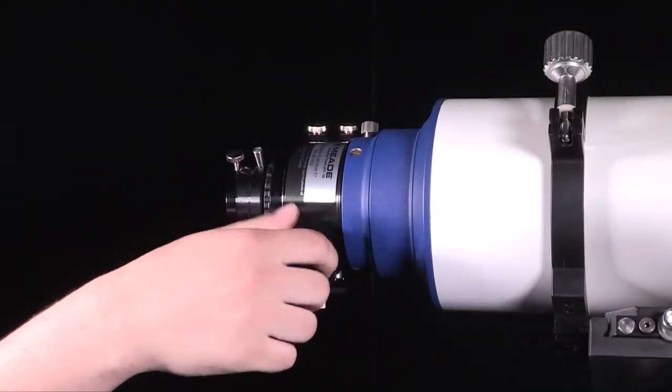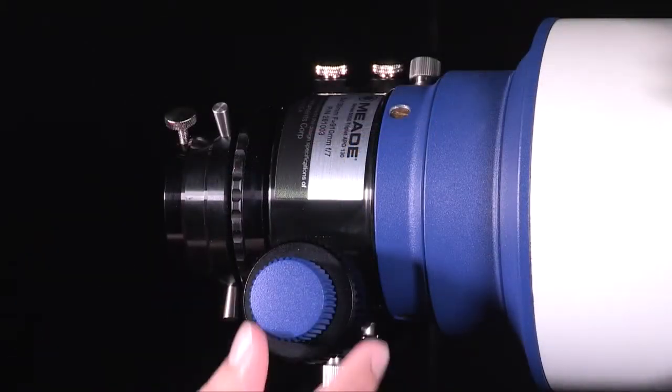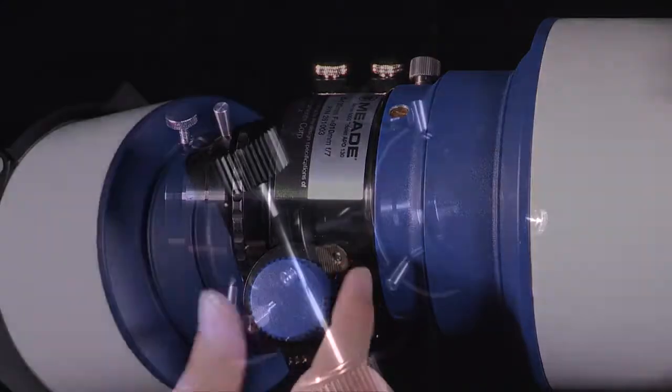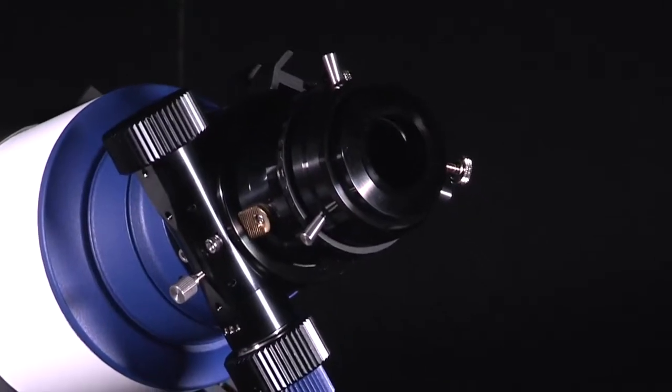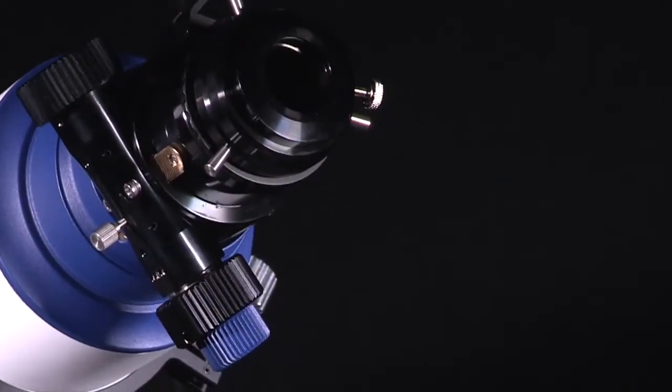New to the Series 6000 Triplet APOs is the proprietary 2.5-inch dual-speed rack and pinion focuser. The focuser comes with a 10 to 1 fine focus knob for precise focusing. This focuser includes a 2-inch self-centering locking ring that allows diagonals or cameras to be well-centered to the optical train every time the locking wheel is engaged.